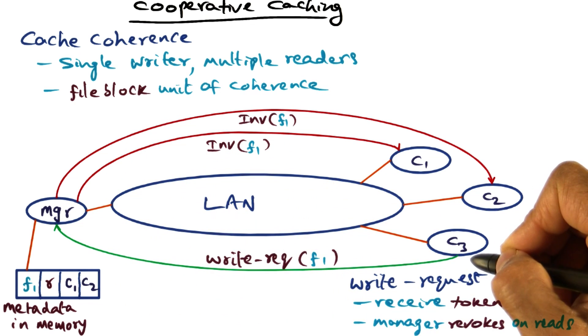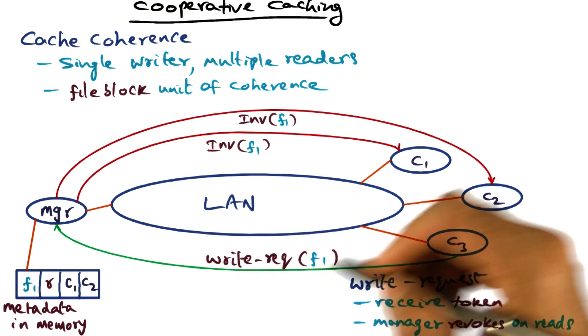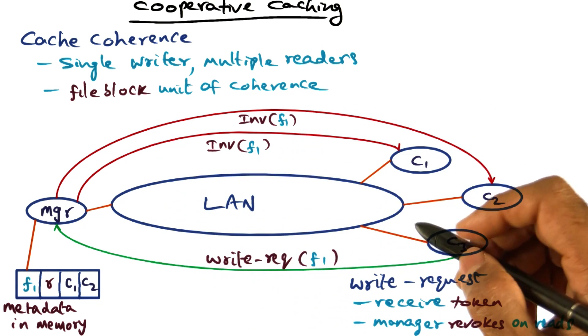At that point, the manager will go to C3 and say, I'm revoking the token from you. You cannot write to that file anymore. You can read it, because the request that I got is only a read request. And therefore, you can keep the file, but you cannot write to it anymore. If you want to write it again, then you have to make a request again. This is the protocol that is observed.